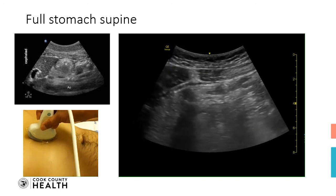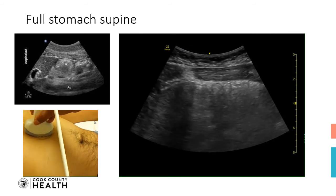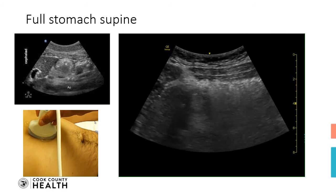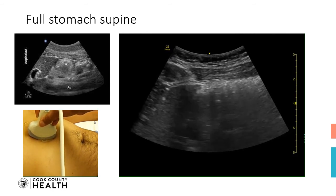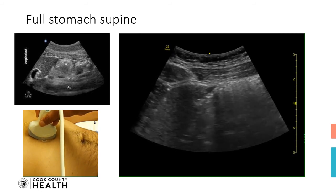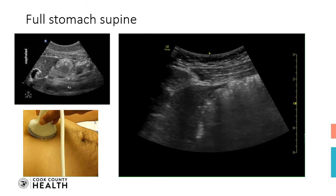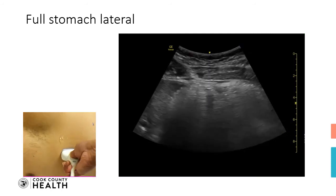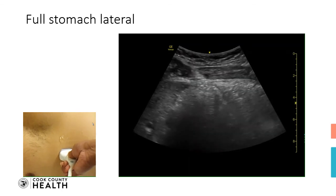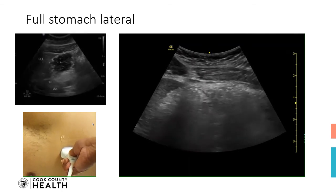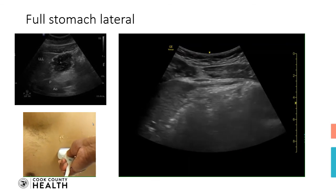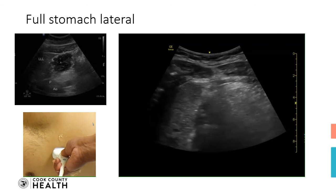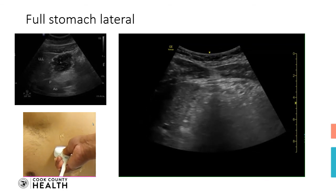Can you hold your breath? Now you can see the antrum very clearly — it is a heterogeneous structure, meaning it is full of liquid and solid particles. Now the subject is in the right lateral decubitus position, and you can see the antrum is very heterogeneous — again full with liquid and solid particles. This is the antrum, and this is the liver.